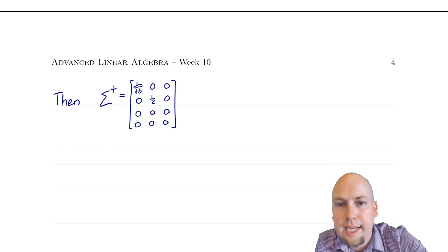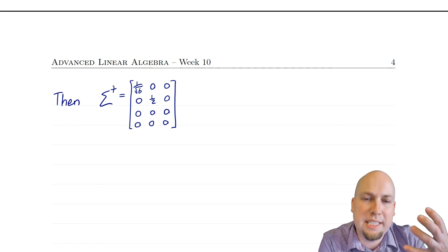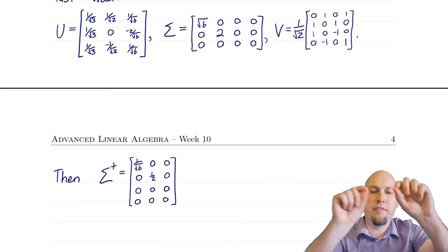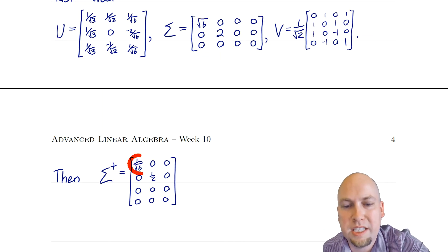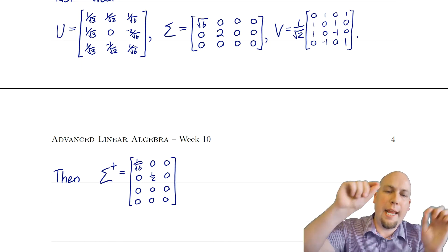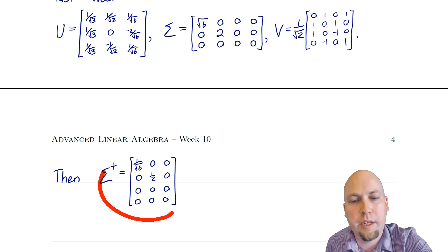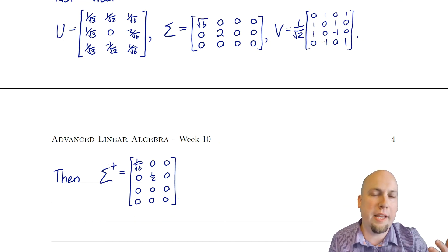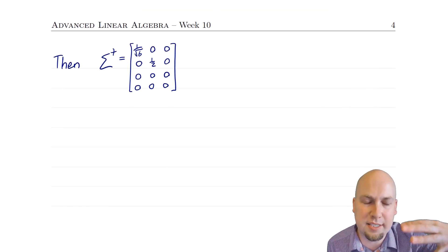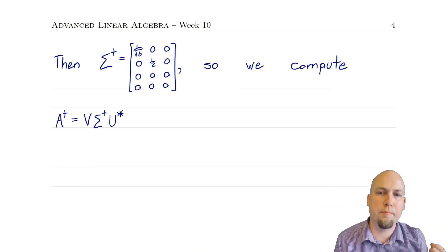First, compute Σ†: take the reciprocal of every non-zero entry on the diagonal — root 6 becomes 1/root 6, 2 becomes 1/2 — and leave all the zeros alone. Then transpose it to change its shape from 3×4 to 4×3. Be careful to transpose it so that matrix multiplications later on actually work, since the sizes need to match up.